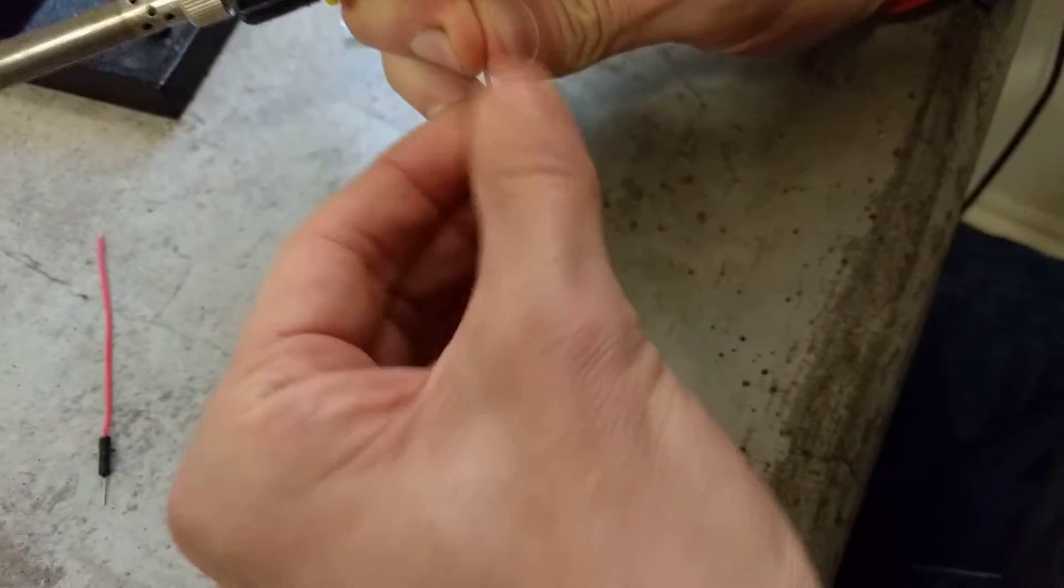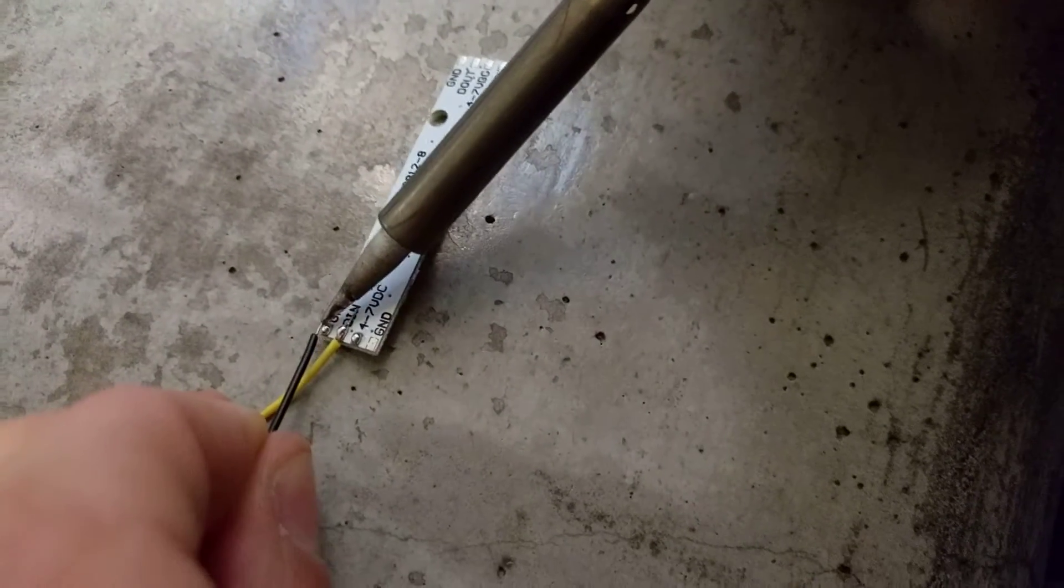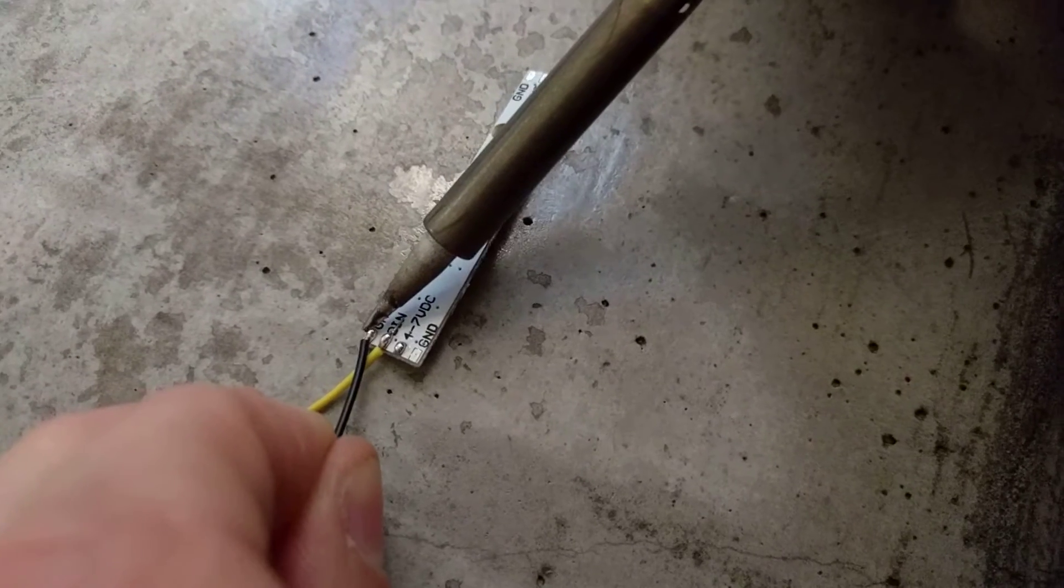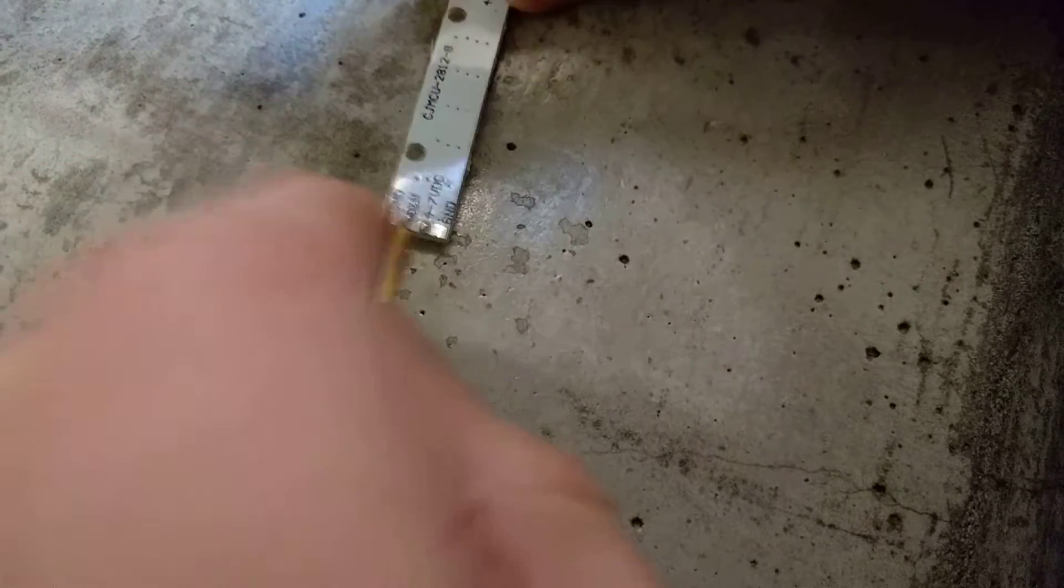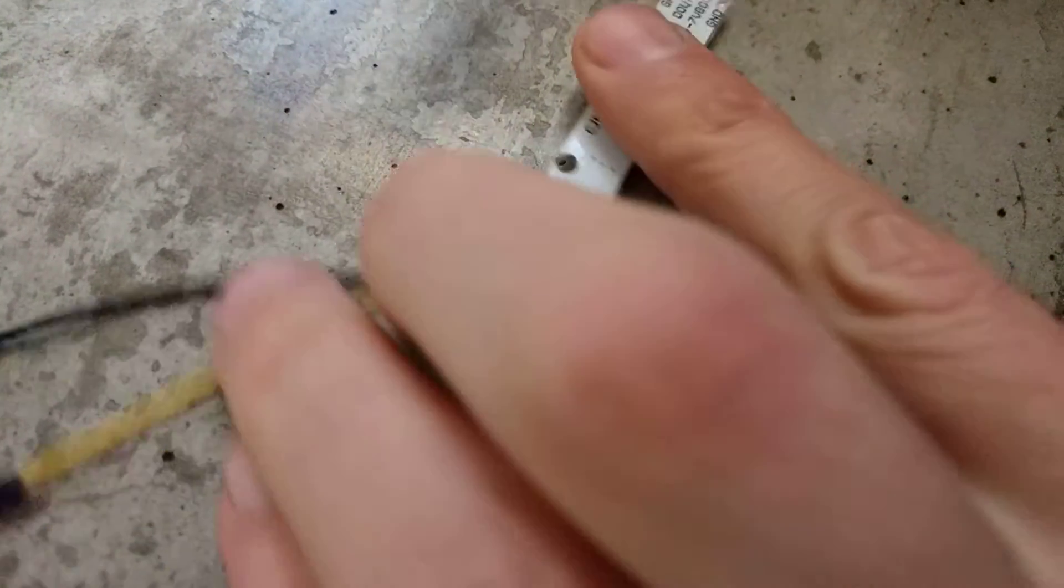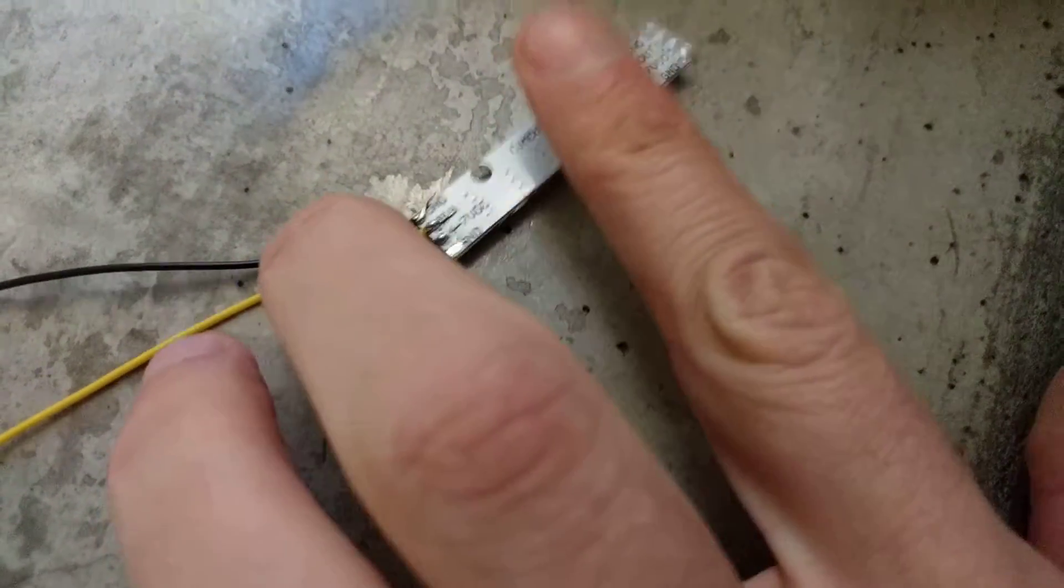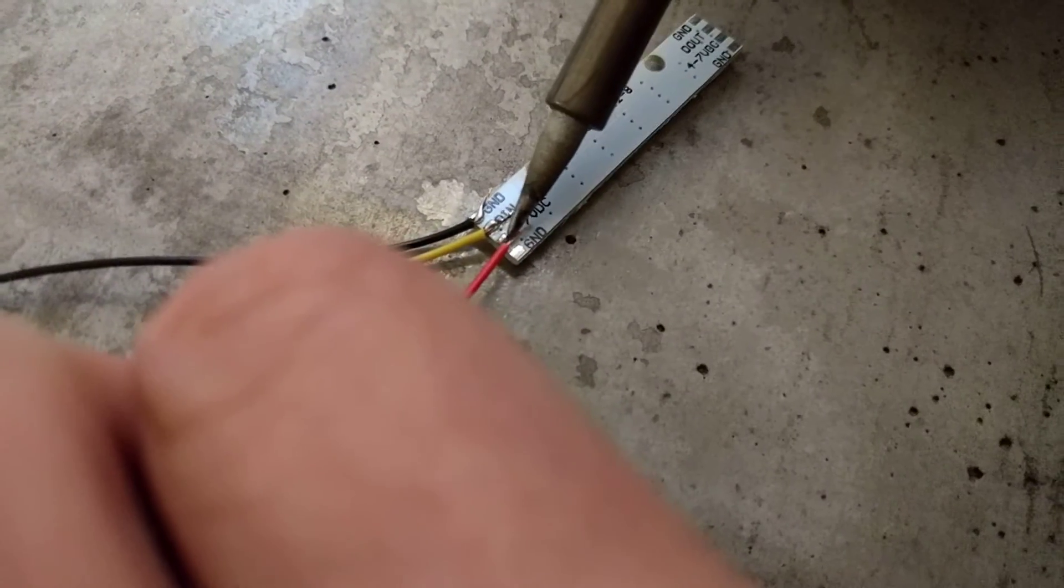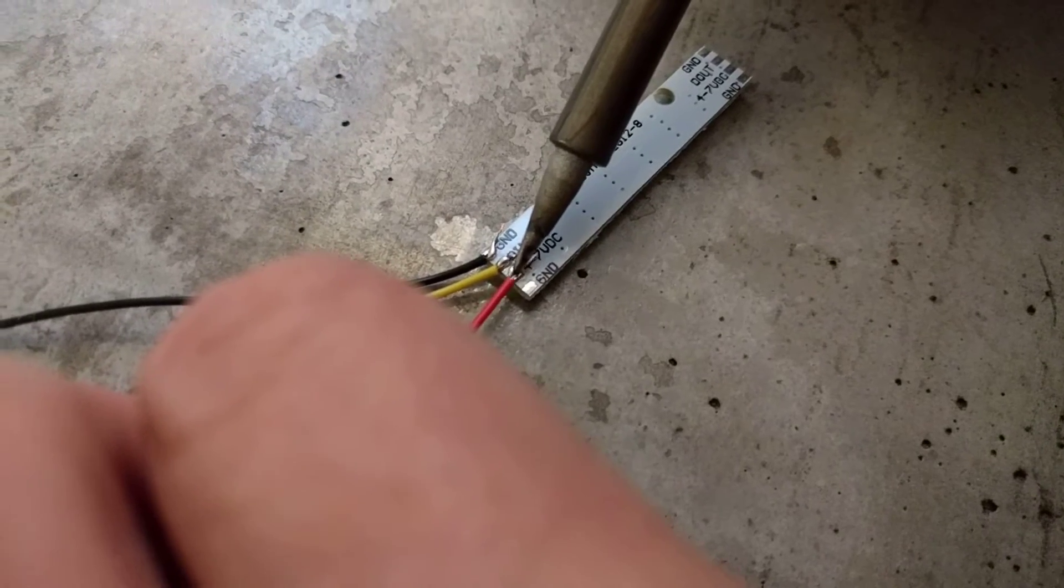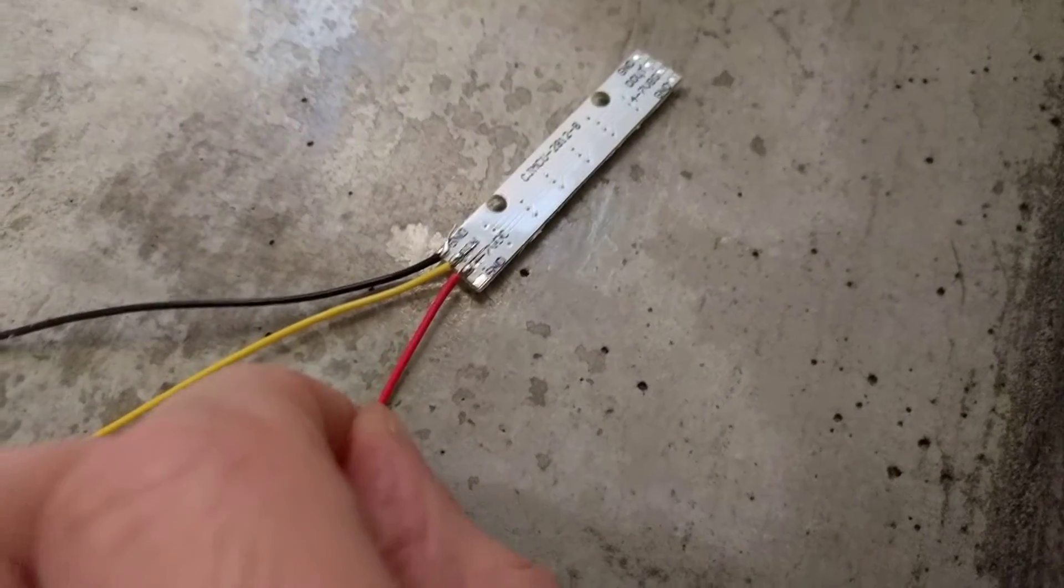So we can do the same thing with the other ones as well so just get that nice and secure. Again it just draws off. They're a little bit fiddly so you have to kind of just watch what's going on and then our final one. Just do the same thing so we just heat up the ball of solder, the solder itself draws up through the wire, and there we go.